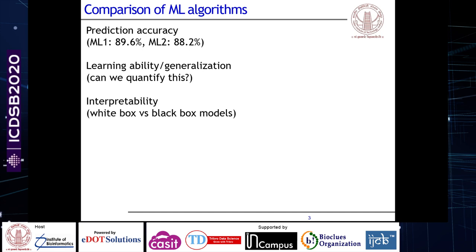The third aspect is interpretability. As Dr. Praveen alluded to, this is the white box versus black box model debate. White box models allow us to understand what factors are taken into account to explain a decision. Black box models are not amenable to such scrutiny. Unfortunately, most models currently in use — neural networks, SVMs, and of course deep learning — are black box models. So interpretability is an acknowledged issue.